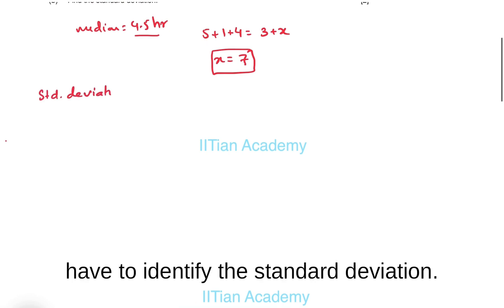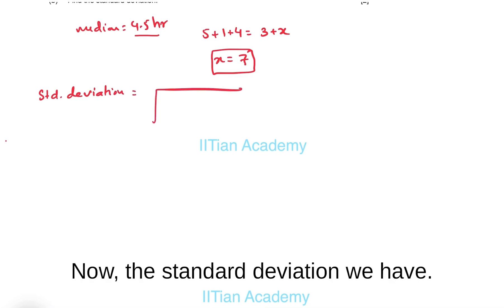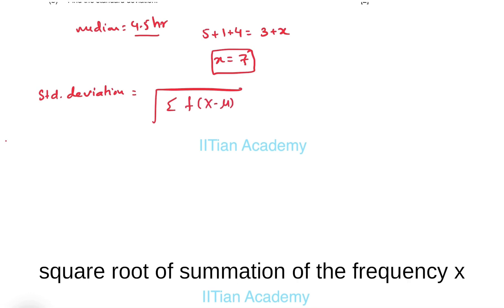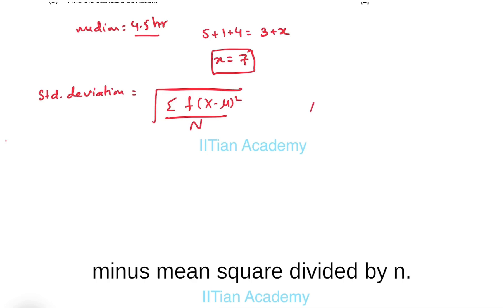In part b we have to identify the standard deviation. The formula for standard deviation is square root of summation of frequency times x minus mean squared, divided by n. For this we have to identify the value of the mean.